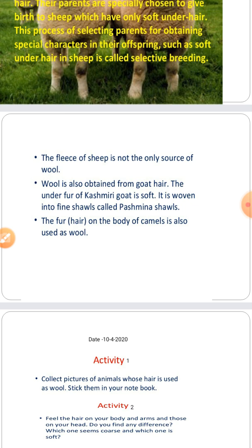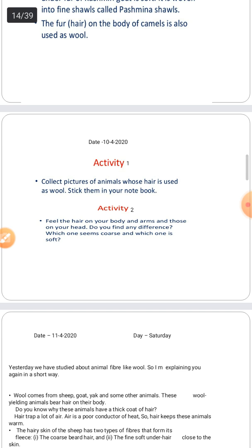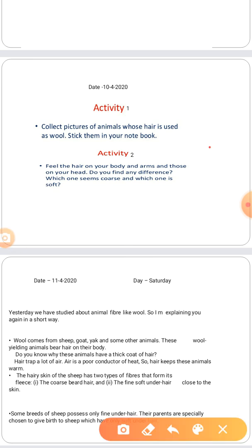I have sent you two activities. First, collect pictures of animals whose hair is used as wool and stick them in your notebook. Second, feel the hairs on your arms and those on your head — notice the difference between which ones are coarse and which ones are soft.